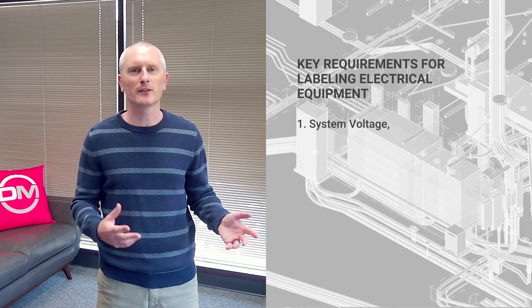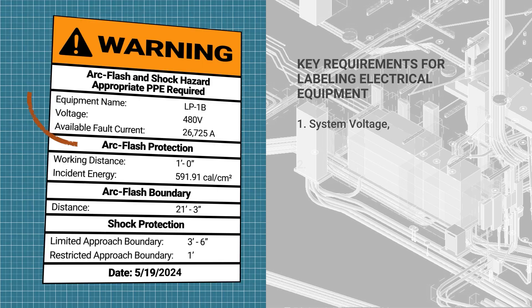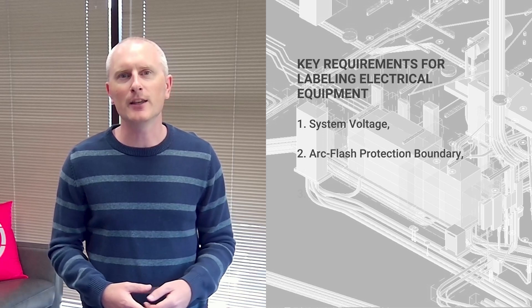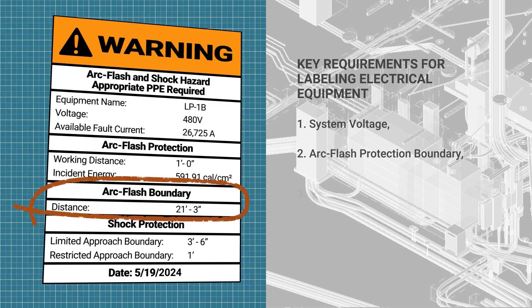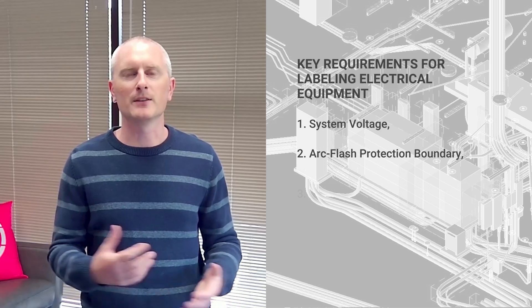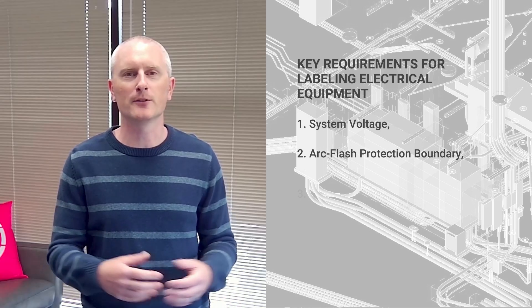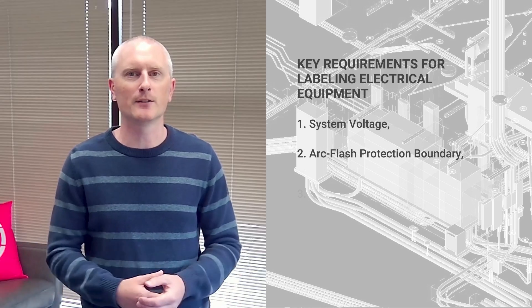There are really three things that the labels ask for. The first is the system voltage — that's straightforward, you can just pull that from the voltage of the piece of equipment you're looking at. The next is the arc flash protection boundary, which is how far away from the equipment you have to be to be safe without any protective gear on. This is something our software calculates for you, and we include that on the label.